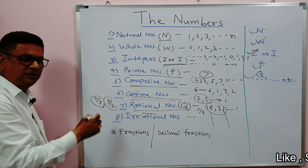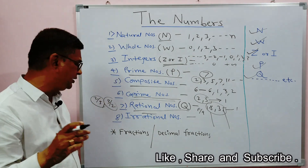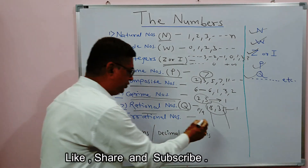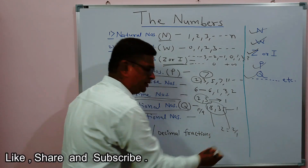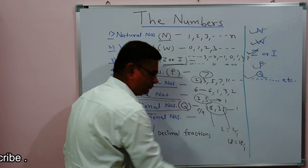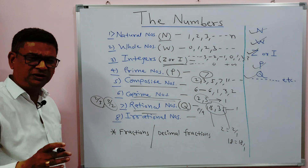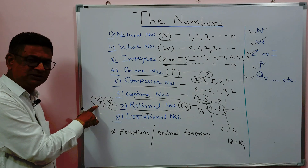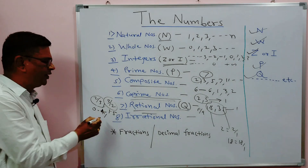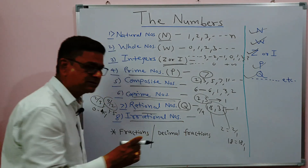Natural numbers, whole numbers, and integers are also rational numbers — for example, 2 can be written as 2 upon 1, and 18 as 18 upon 1. Some fractions are also rational numbers: 2 by 5 equals 0.4, and 3 by 2 equals 1.5 — these are all rational numbers. What about irrational numbers?